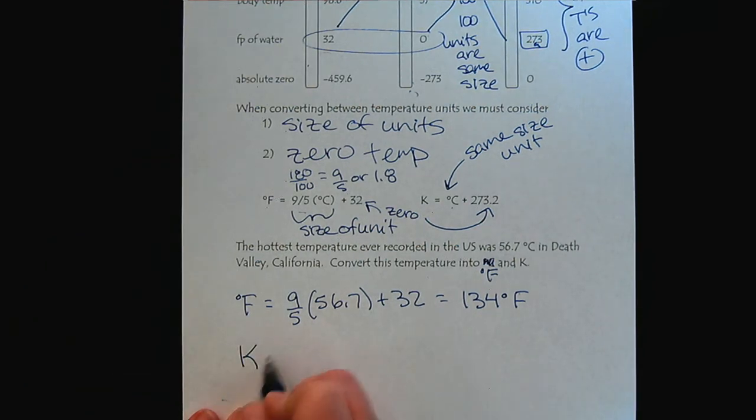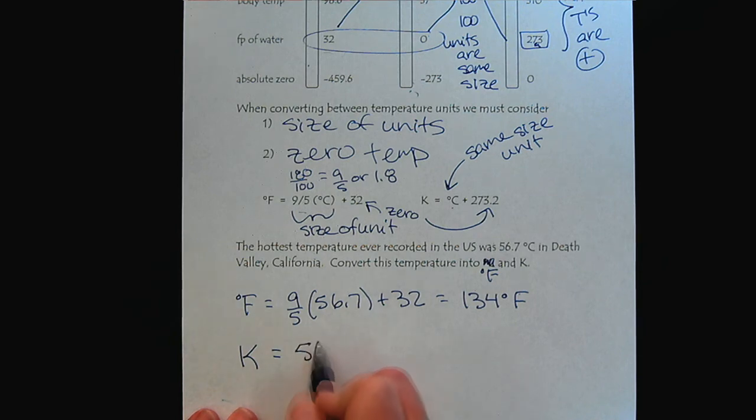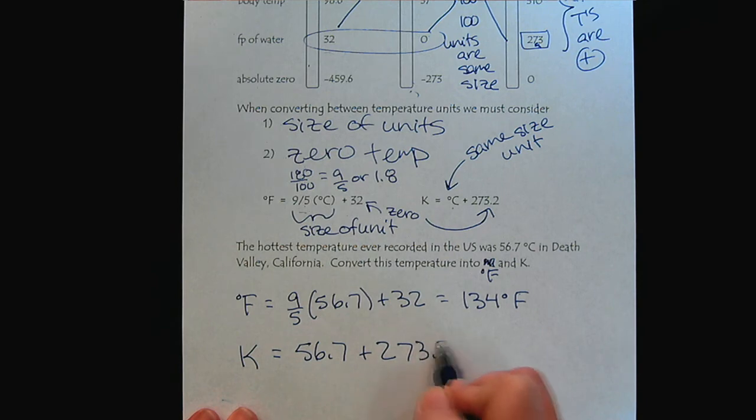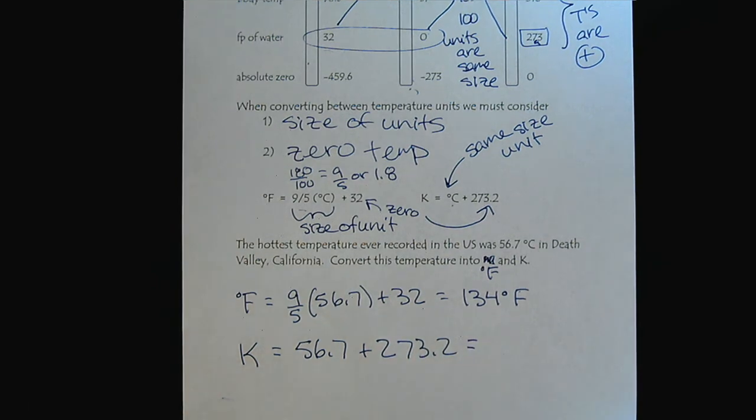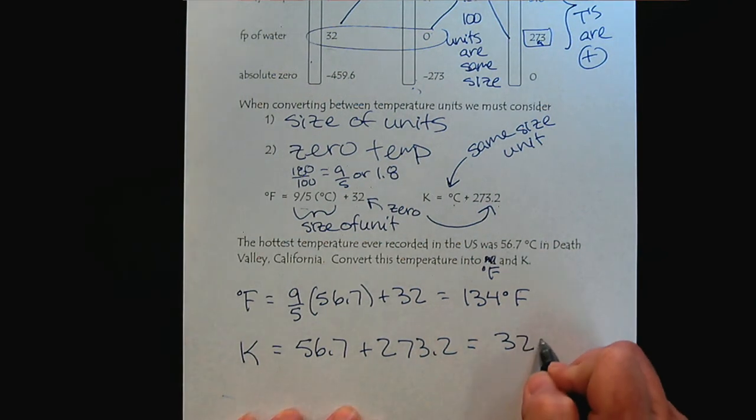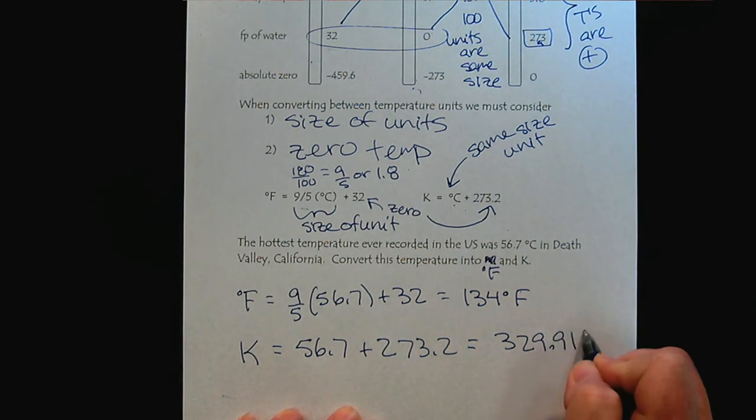If we wanted to go to Kelvin, that would simply be 56.7 plus 273.2. We'll punch that into our calculator and get 329.9 Kelvin.